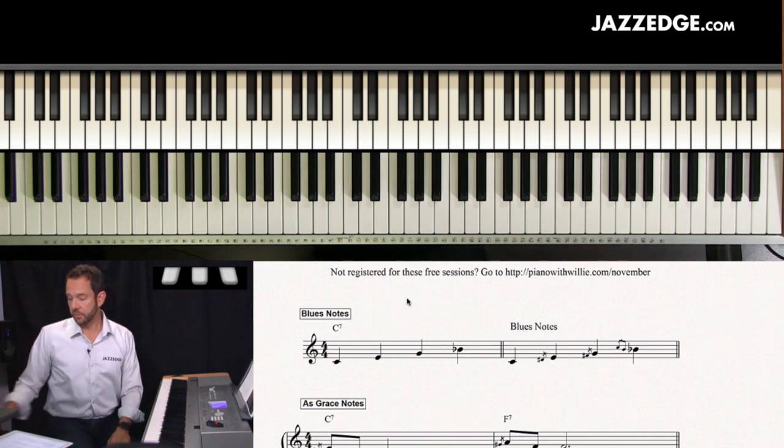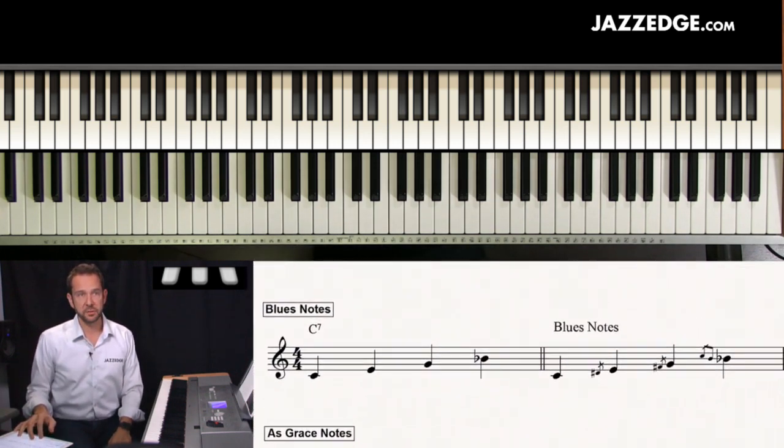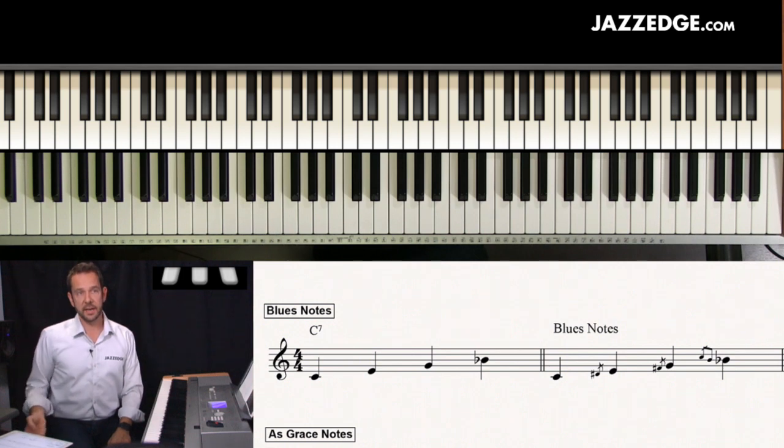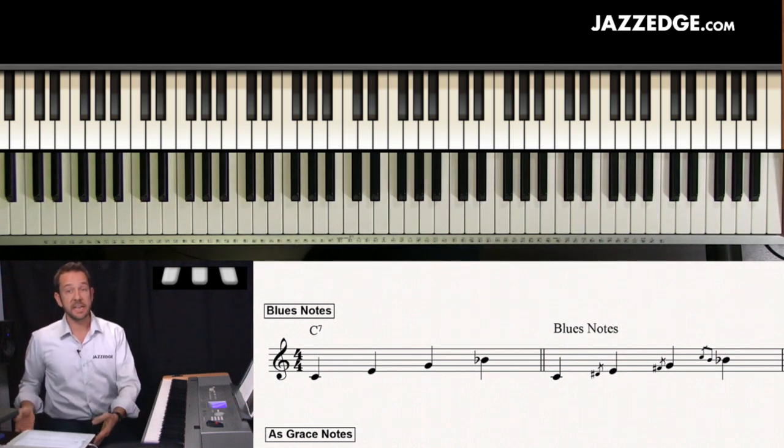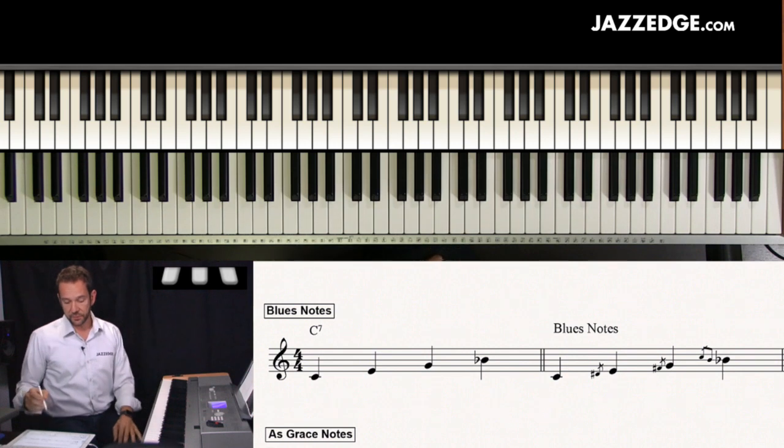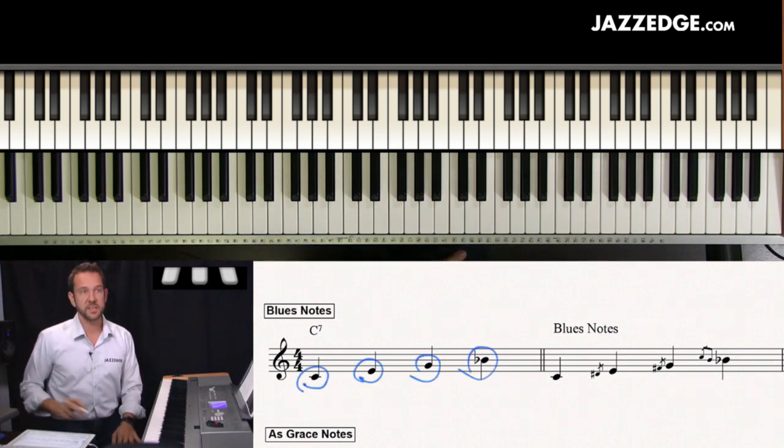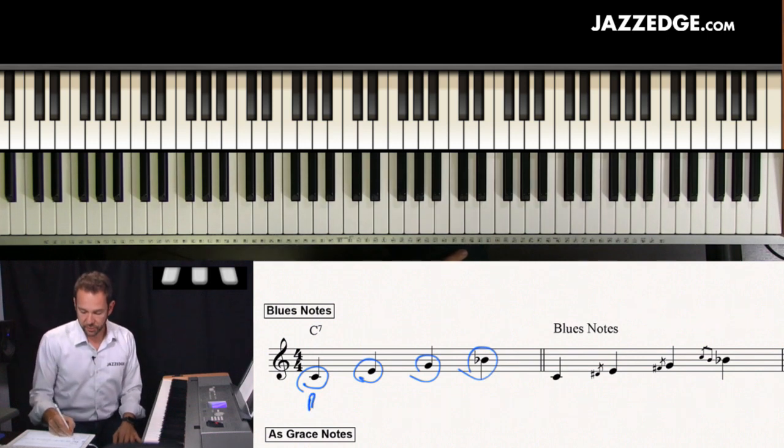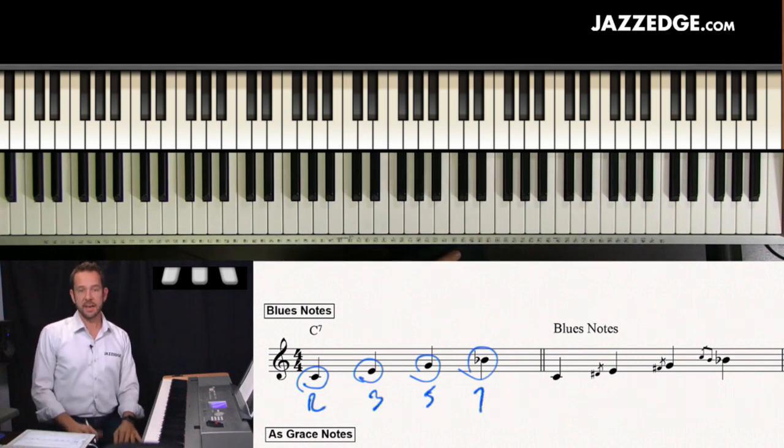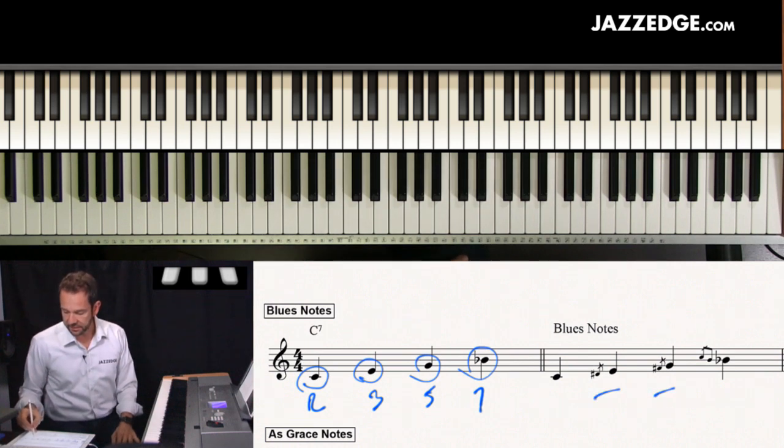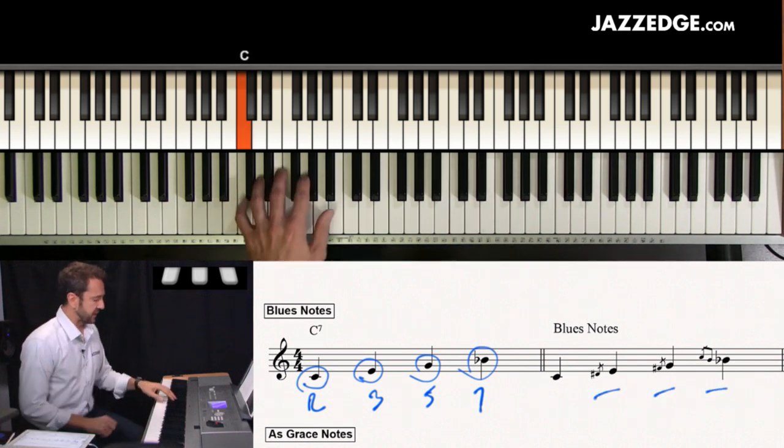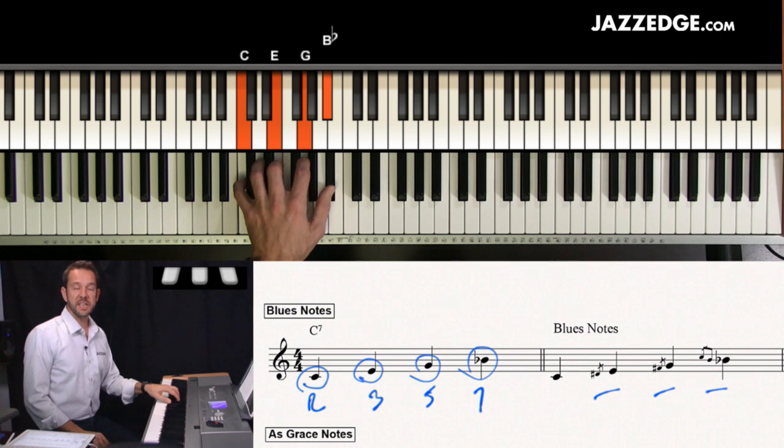All right, so we're going to start here with these blues notes and then you will get this sheet music emailed to you. First of all, see here we have just our regular tones of our C7 chord, so this would be the root, this is the third, this is the fifth and that's the seventh. Then we have these blues notes in here, and so basically those are the tones of your C7 chord, your C dominant seventh chord.